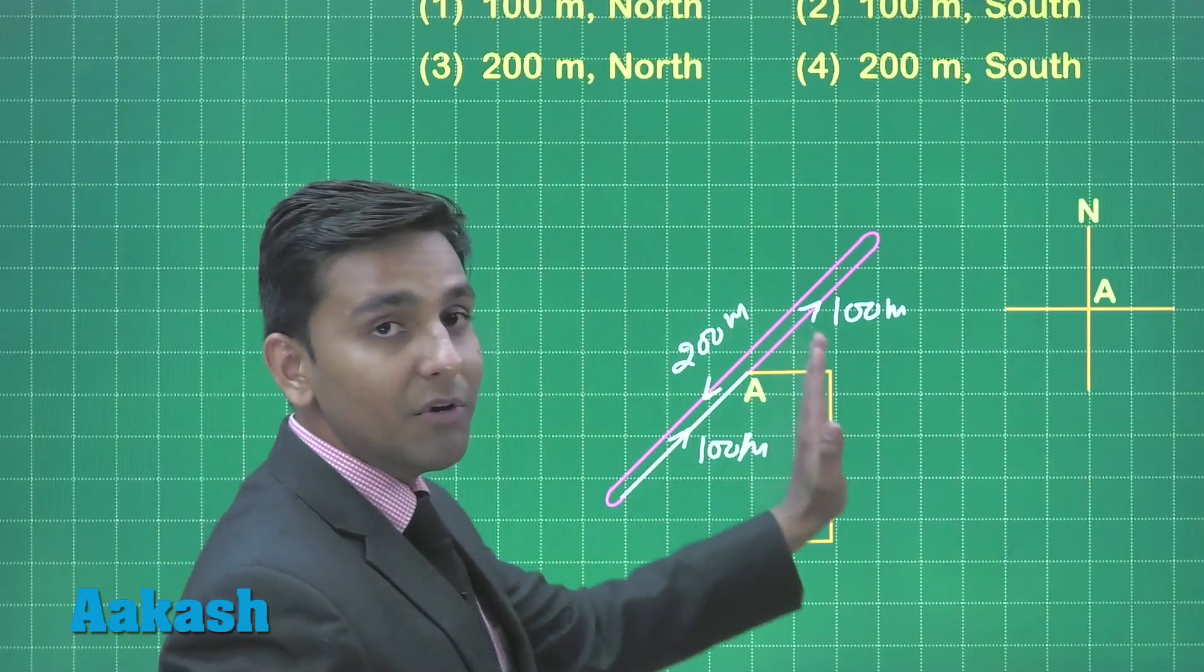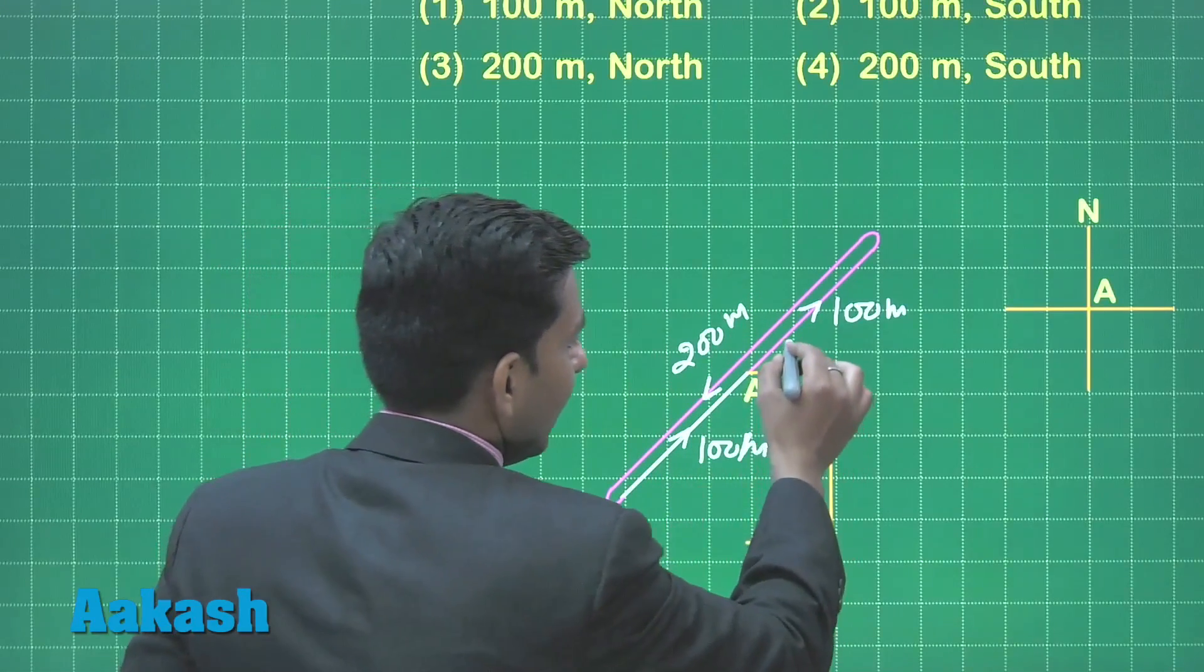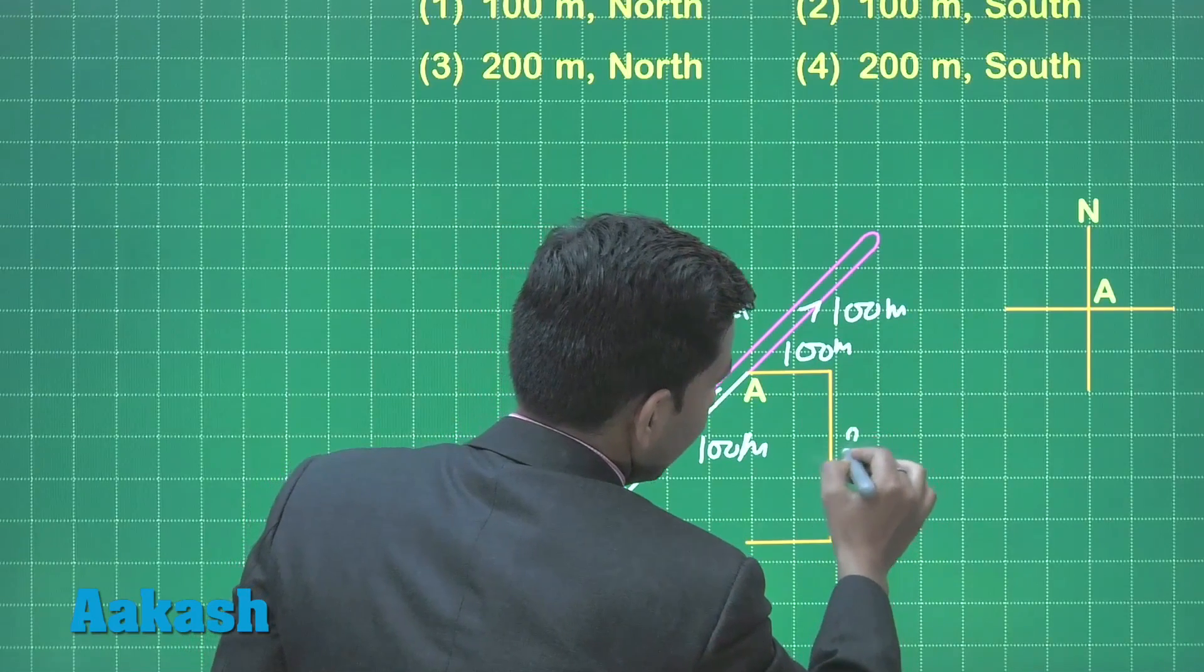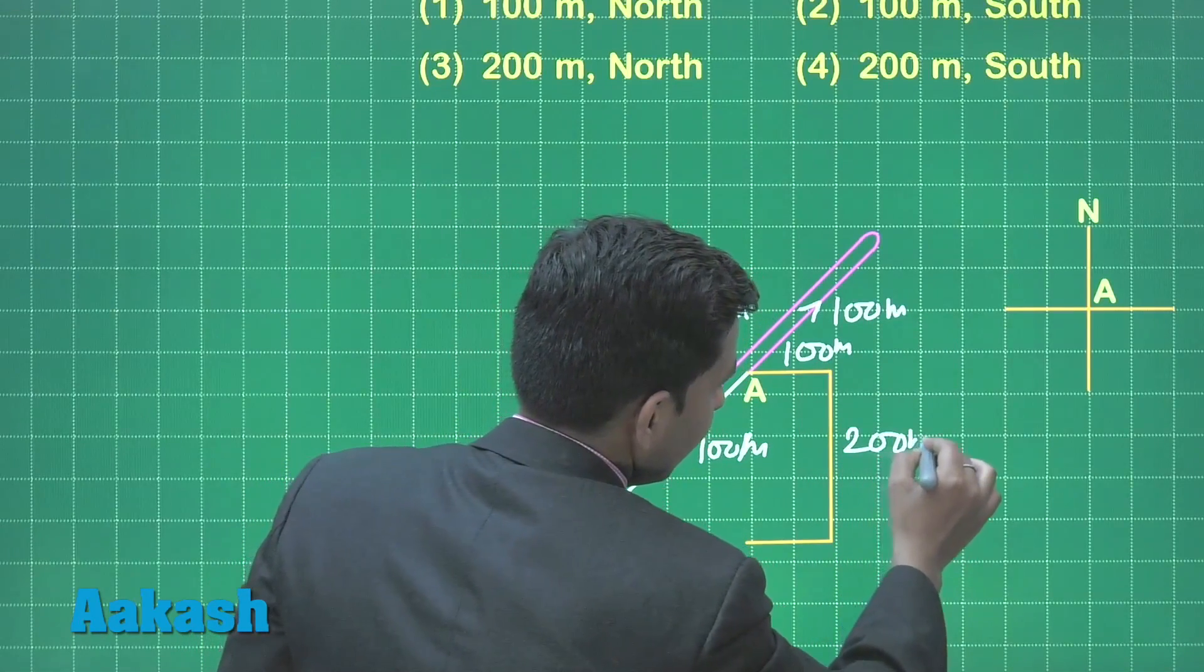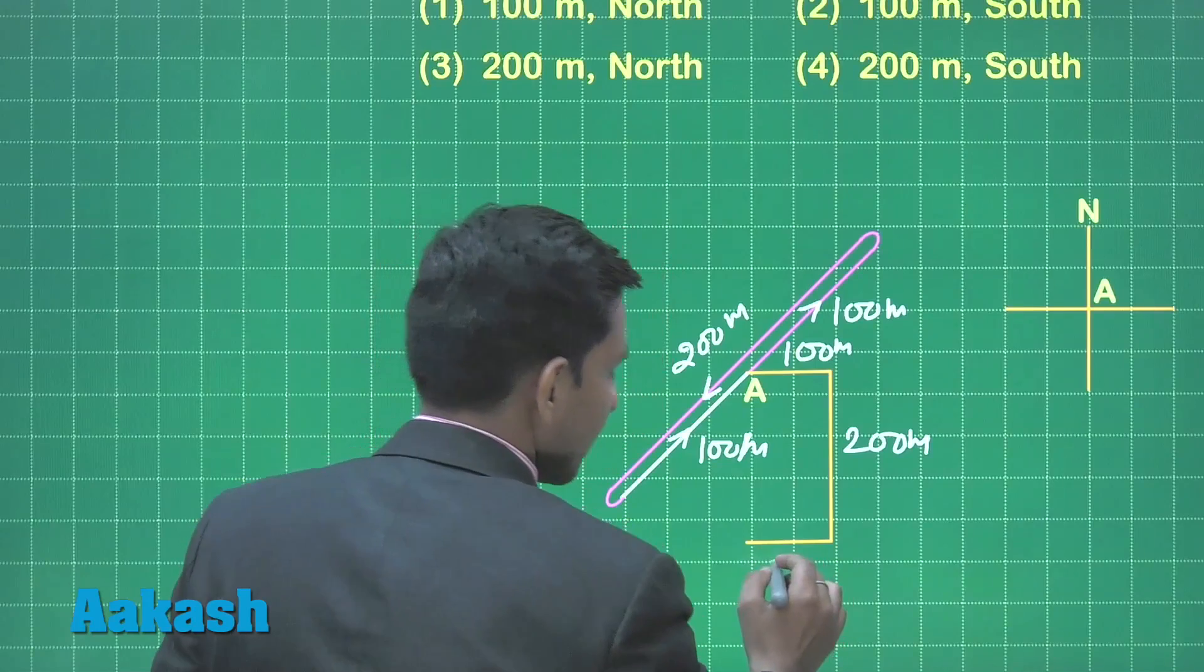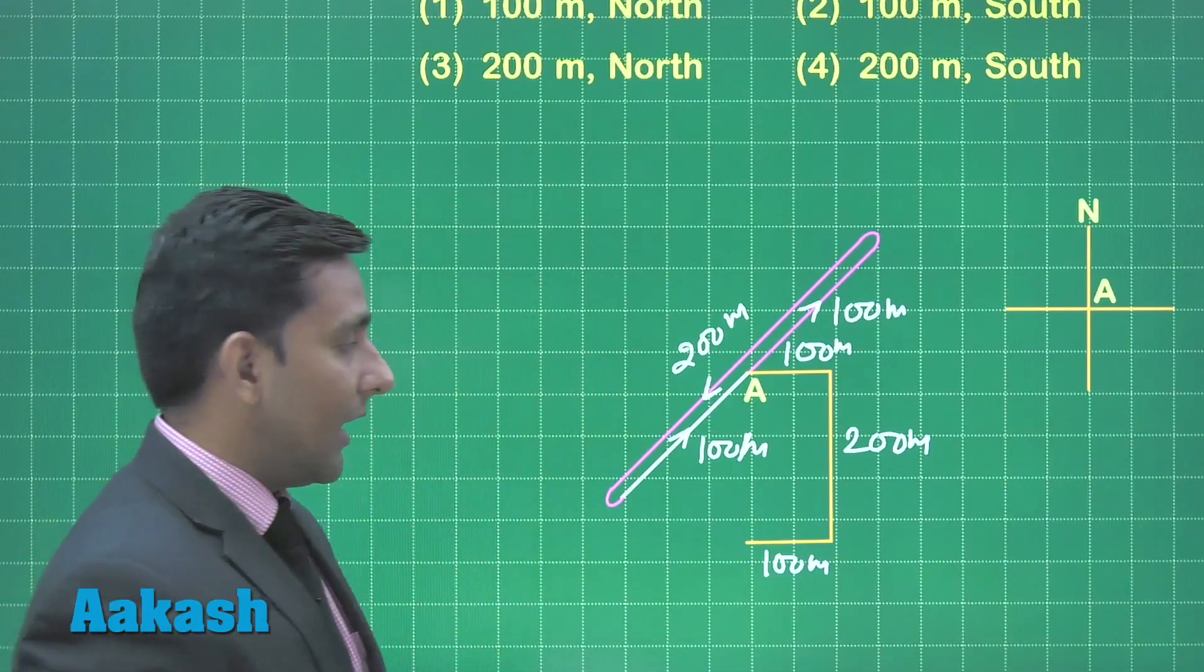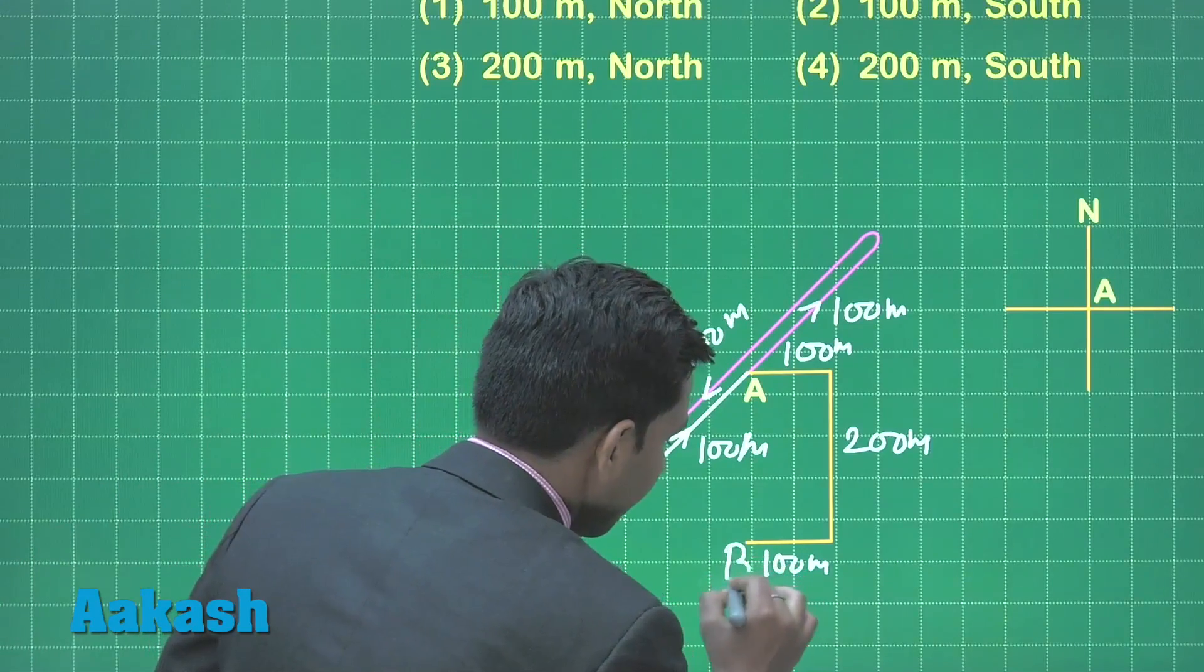Now he move 100 meter towards east and again take right turn and move 200 meter in south direction. Again he take turn and move towards westward and travel total 100 meter distance and finally reaches at point B.